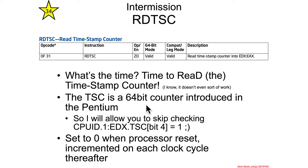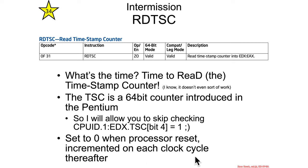The timestamp counter is a 64-bit counter introduced in Pentiums. You probably don't need to use CPUID to check whether the TSC bit is set to confirm it's supported, but I made you do that for CPUID itself, so whatever. The thing about the timestamp counter is that when the processor is reset, it resets to zero and then increments on every clock cycle thereafter.